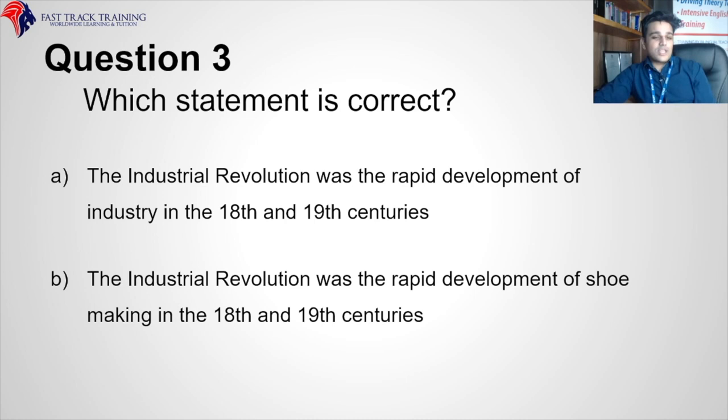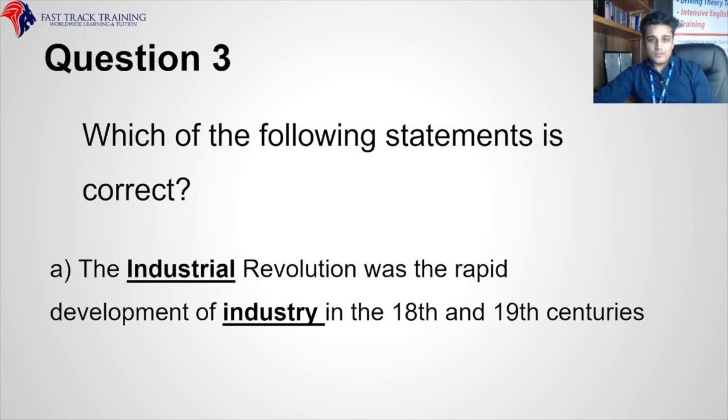Which statement is correct? The Industrial Revolution was the rapid development of industry — or shoemaking — in the 18th and 19th century? Easy: industrial = industry = factories. Make those two connections and you're good.